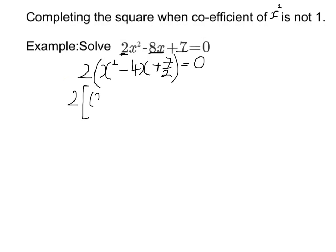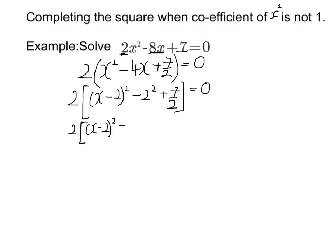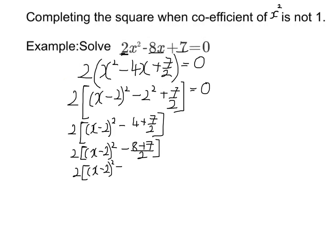I'm going to complete the square just as I always would. Divide minus 4 by 2, take that bit away — minus 2 squared. Notice how I'm using square brackets to distinguish between these curvy brackets here. Now I'm going to tidy up that inside bit, keeping my big square brackets. I've got minus 8 plus 7 all over 2, which gives me minus one half.